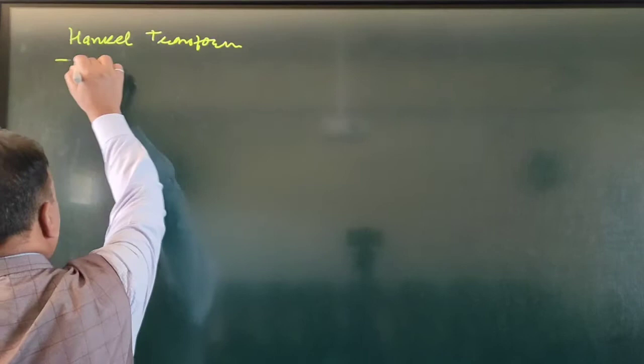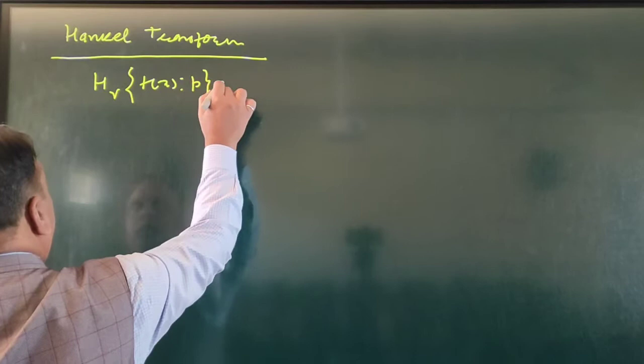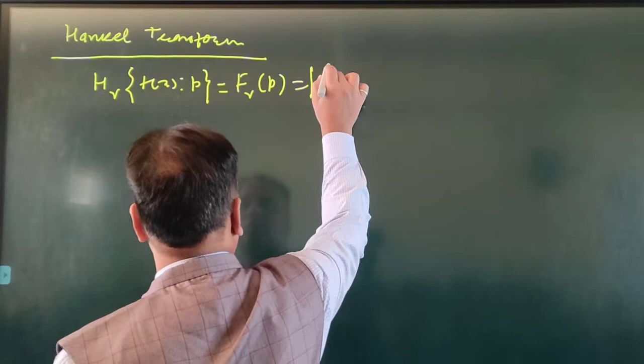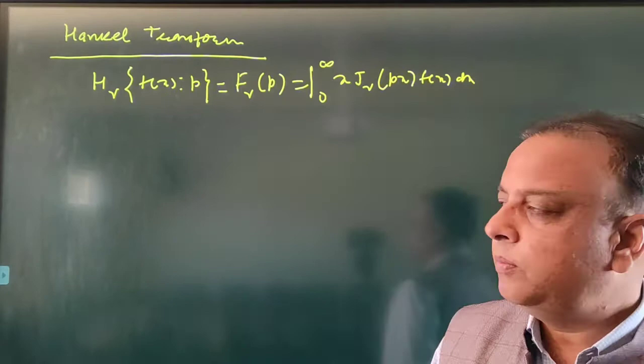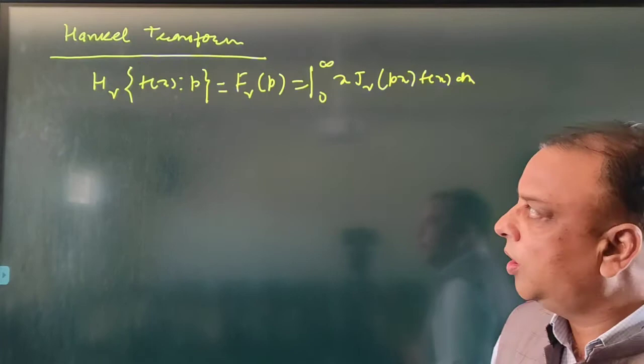Good morning students. Today we are going to discuss the Hankel transform of some more functions. We use the definition of the Hankel transform: H_ν{F(x)} with respect to parameter p is equal to F_ν(p), which equals the integral from 0 to infinity of x · J_ν(px) · F(x) dx. Using this definition of the Hankel transform, we have to find the Hankel transform of some functions.